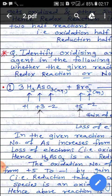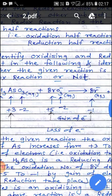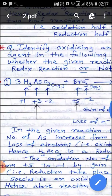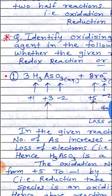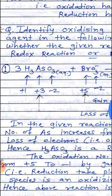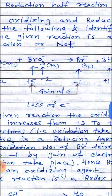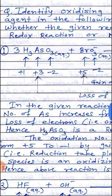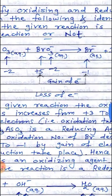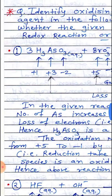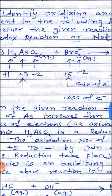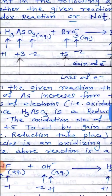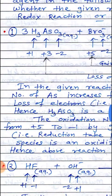The next part — the question that can be asked on this topic — is: identify the oxidizing and reducing agent in the following reaction, and identify whether the given reaction is a redox reaction or not. For that purpose, we have to write the given reaction, then assign or calculate the oxidation number for all the elements in both reactants and products.